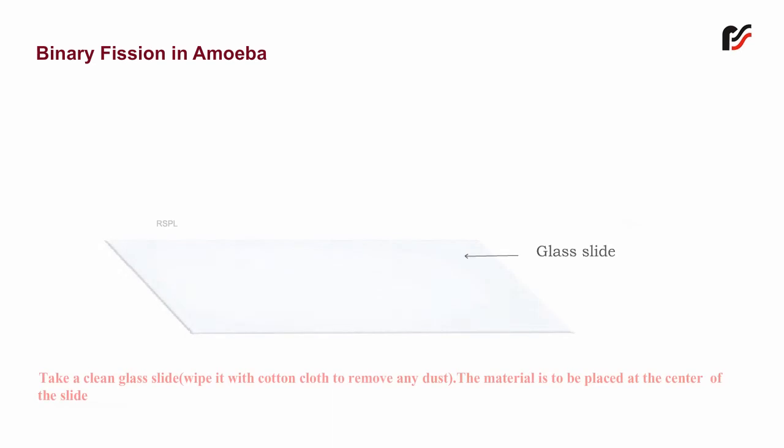Binary Fission in Amoeba. Take a clean glass slide and wipe it with cotton cloth to remove any dust. The material is to be placed at the center of the slide.